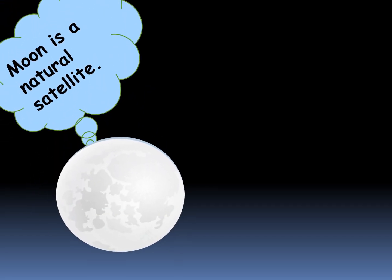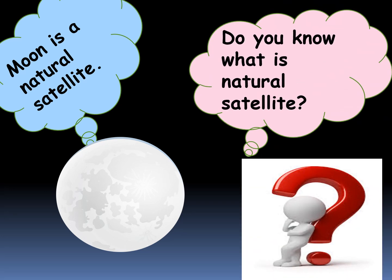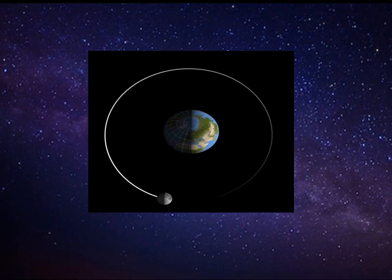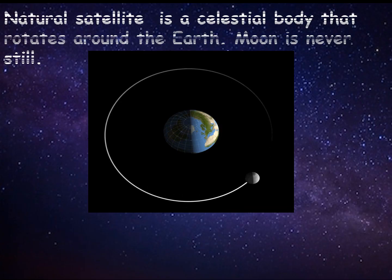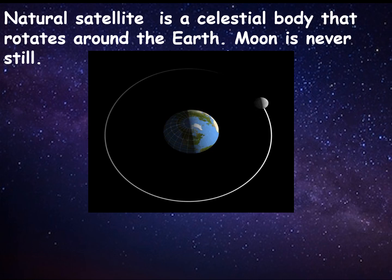Moon is a natural satellite. Do you know what is a natural satellite? Natural satellite is a celestial body that rotates around the earth. Moon is never still. As you can see in this picture, the moon is revolving around the earth.